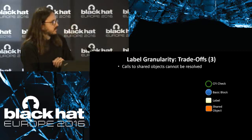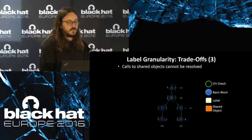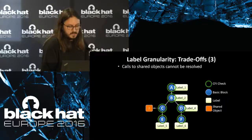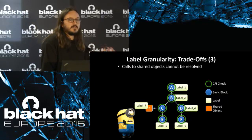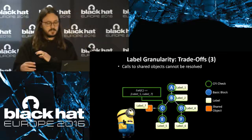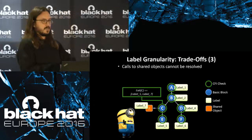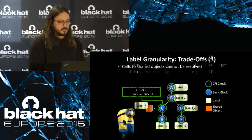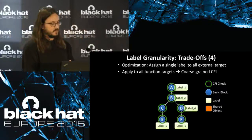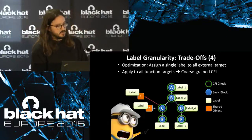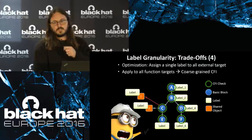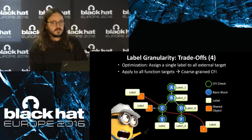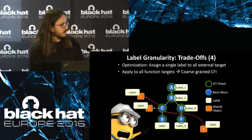There are also label granularity issues. Calls to shared objects cannot be easily relabeled because multiple processes access the same external library. Process A and process B both want to call the same function from libc — how do you label those? The traditional solution has been to apply a single label to all external functions, but this is not ideal because you can redirect control to all of those labels. Dynamic points-to analysis can help recover and resolve this limitation.